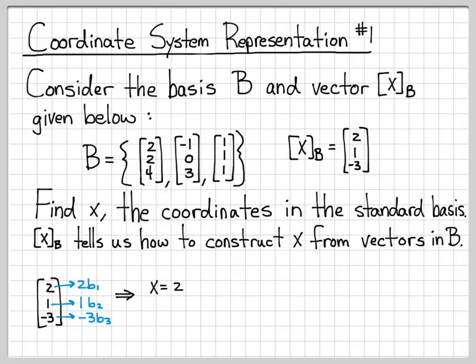So we can go ahead and form this linear combination now to figure out what x is. x is going to be 2 times this first column, plus 1 times the second column, plus negative 3 times the third column.